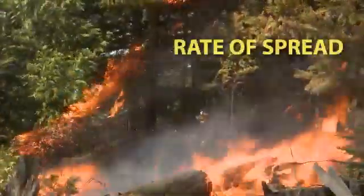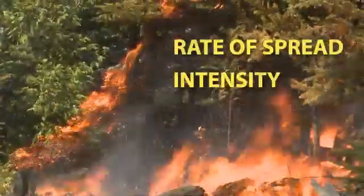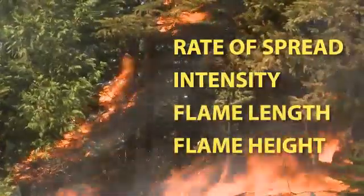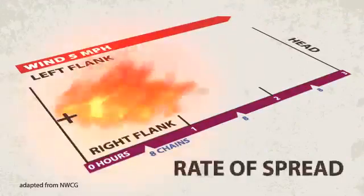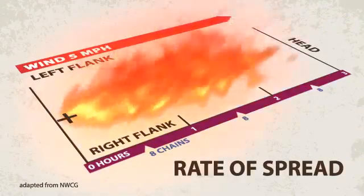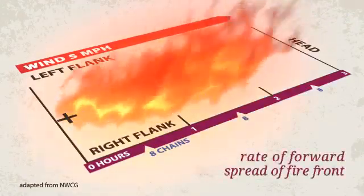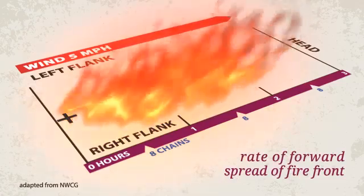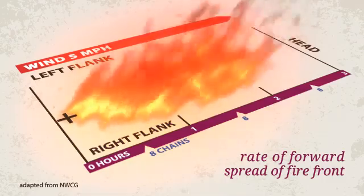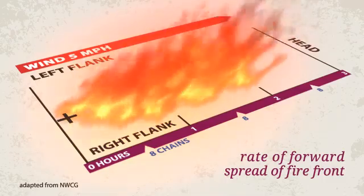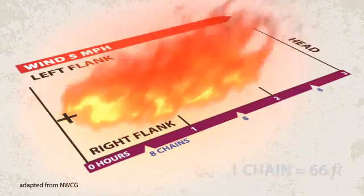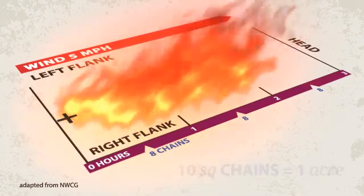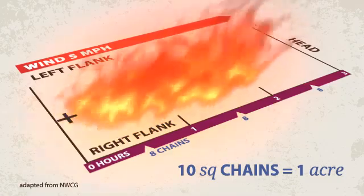Rate of spread, fire line intensity, flame length, and flame height. Let's start with rate of spread. Rate of spread is basically how fast the flaming portion of the fire is moving. This is expressed as an average distance over time, such as feet per minute or chains per hour. A chain is a popular and convenient unit of measurement used to describe distance, with one chain equal to 66 feet, 80 chains equal to 1 mile, and 10 square chains equal to 1 acre.